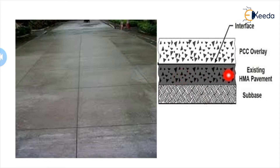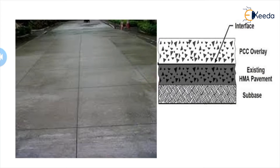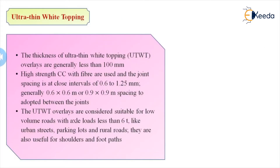This type of rigid pavement overlay advancement is generally considered in city areas. The existing HMA (hot mix asphalt) layer is the flexible base, and on top of that a PCC overlay is placed, with varying thickness from 100 to 200 mm depending on the design. You can clearly see the joint cutting is much reduced compared to the normal 3.5 by 4.5 rigid pavement — the cutting is up to 1 to 1.25 meters. This concludes the rigid pavement overlay over the existing flexible pavement.